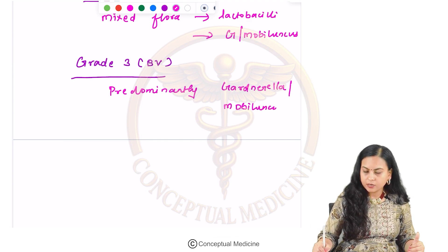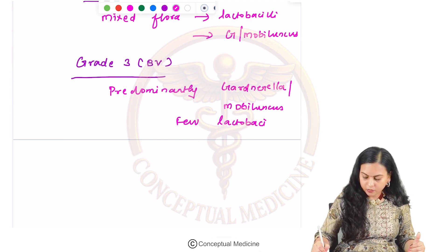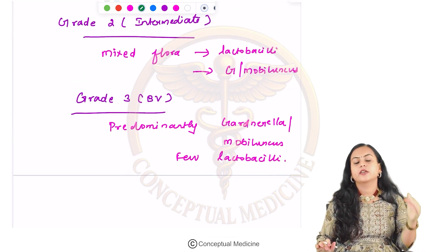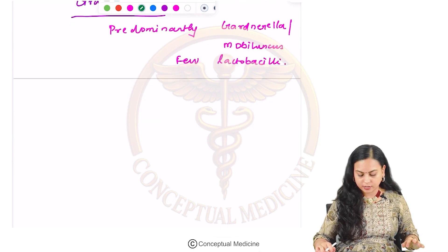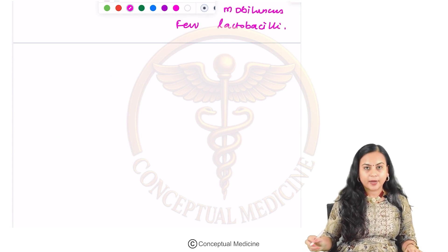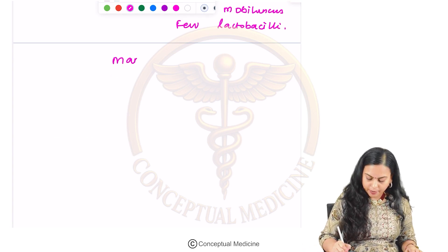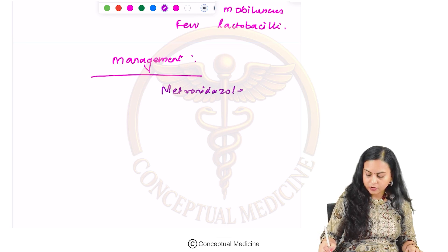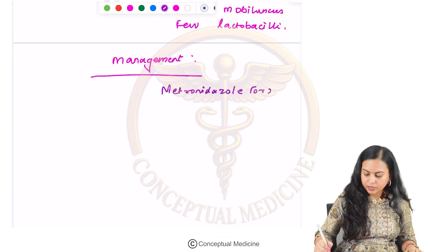Grade 3 of the Hay/Ison criteria represents bacterial vaginosis, where Gardnerella or Mobiluncus predominates, and there may be few or no lactobacilli present. Management of bacterial vaginosis can be done by giving metronidazole or clindamycin.